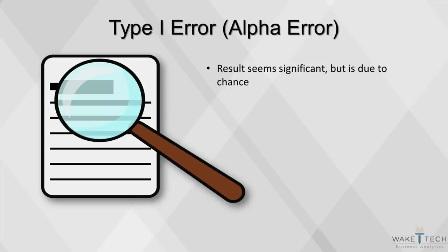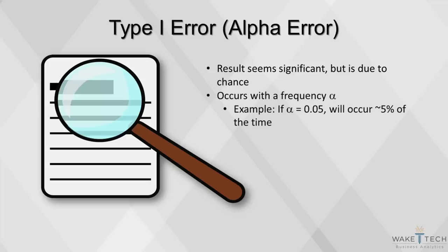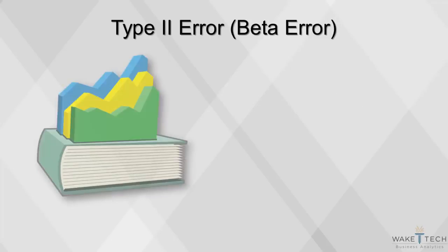The type 1 error, or the mistake of rejecting the true null hypothesis, will happen with a frequency of alpha. Thus, if alpha, our critical value, is 0.05, then a type 1 error will occur 5% of the time. On the other hand, a type 2 error occurs when results seem insignificant, but in fact there was something significant going on.